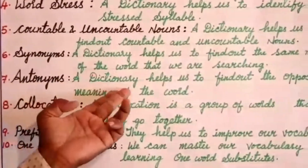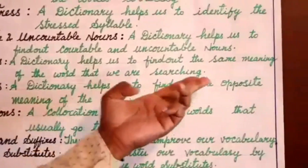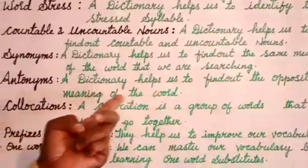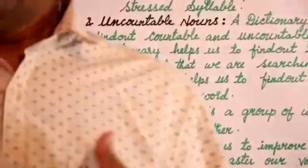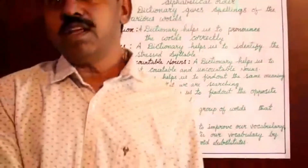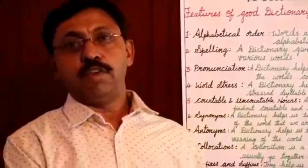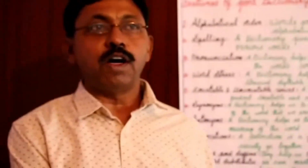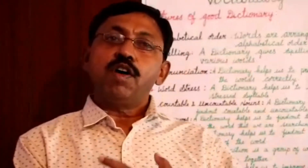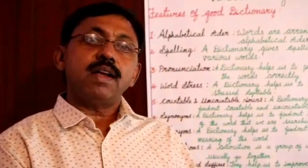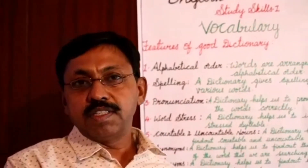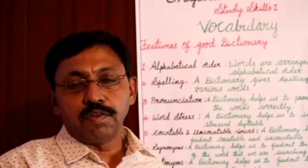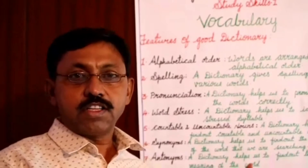Antonyms. A dictionary helps us to find out the opposite meaning of a word. Say for example, if you are taking the word 'beautiful,' and you want the opposite of that — 'ugly' — immediately you will get the opposite meaning of the word from the dictionary.